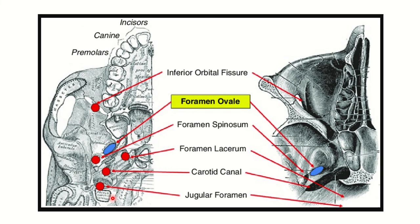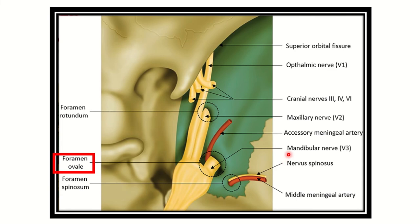First, let's identify the foramen ovale. Here we can see the foramen ovale, which lies in the sphenoid bone. This is an inferior view of the base of the skull, and we can see the foramen ovale located within the sphenoid bone.